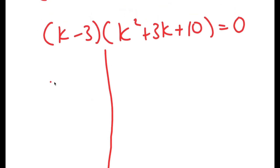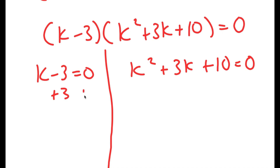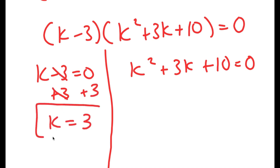Now I'm going to divide this into two different equations. I have k minus 3 equals 0, and k squared plus 3k plus 10 is equal to 0. So for k minus 3 equals 0, I can add 3 on both sides, so I get k is equal to 3.